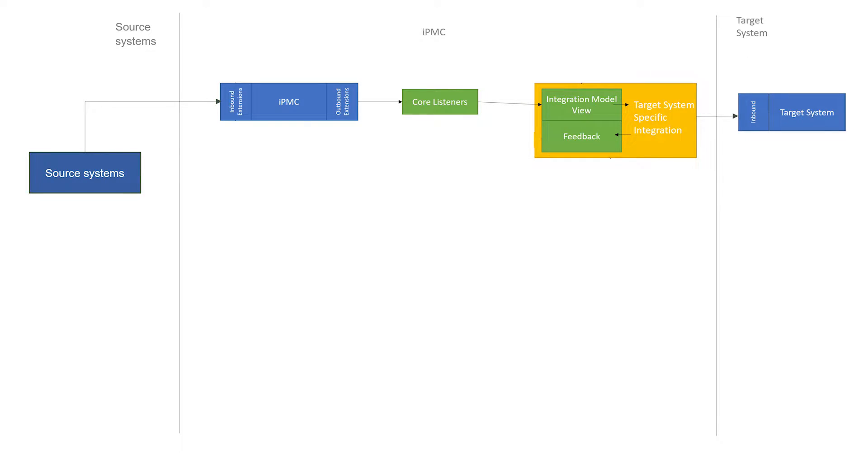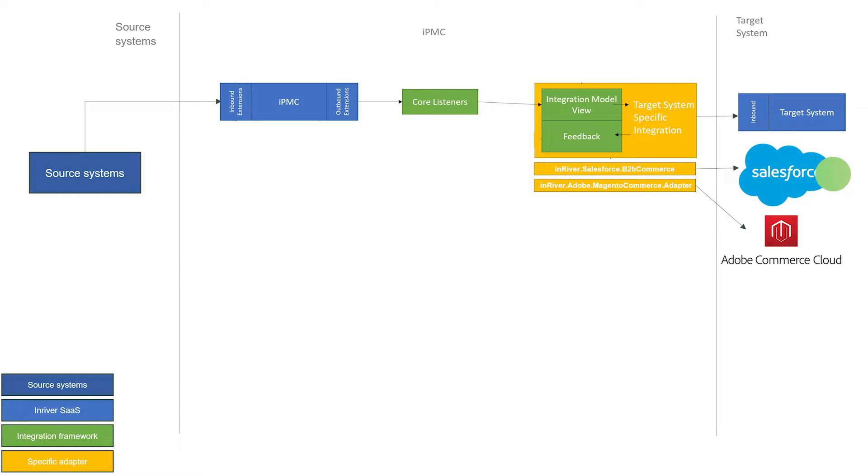Here we have data flowing through PIMP from left to right. Data flows from source systems into InRiver, through the integration framework, through the specific adapter, and finally the data arrives at the target system.